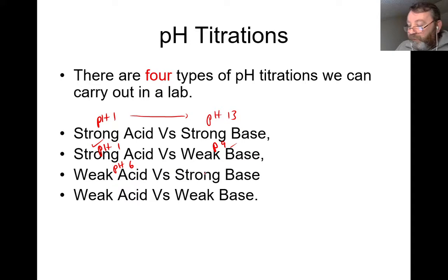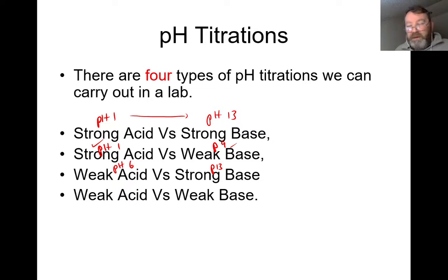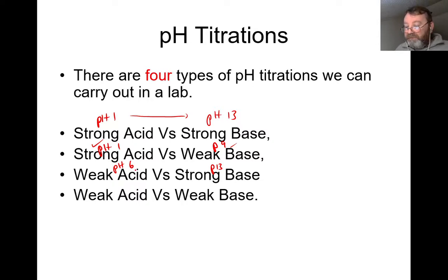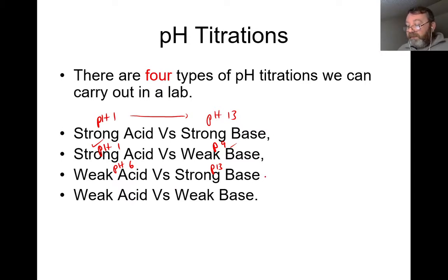For weak acid vs. strong base, you start at about pH 6 and run up to pH 13. Methyl orange won't work — it only works between 3 and 5. Litmus at 5 to 8 doesn't fit either. Phenolphthalein, with its range of 8 to 10, fits comfortably between pH 6 and 13, so phenolphthalein is the indicator for weak acid and strong base titrations.